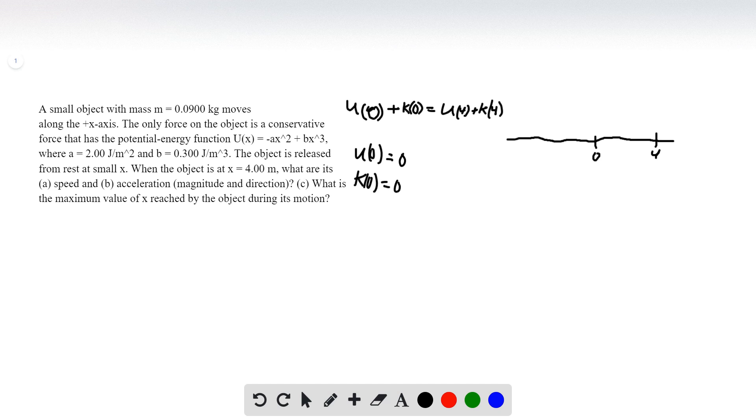We need to figure out what the speed is, so we need to figure out what U4 is. U at x equals 4, basically just plug in 4 equals negative 2 times 4 squared plus B times, and then B is 0.3 times 4 cubed. And that comes out to be negative 12.8 joules. So bring that all down here. We have 0 plus 0 equal to negative 12.8 joules plus K4.